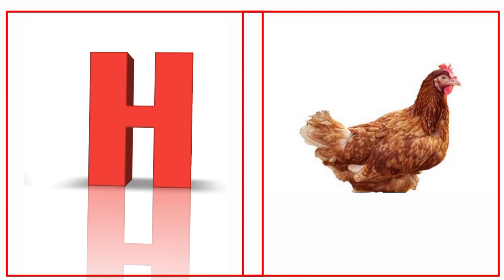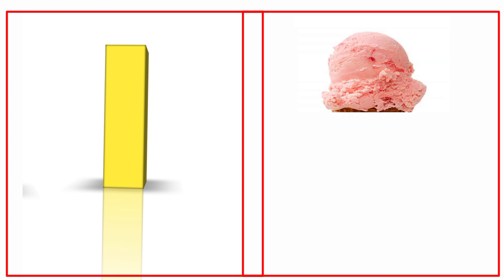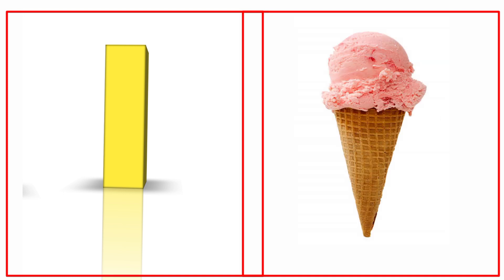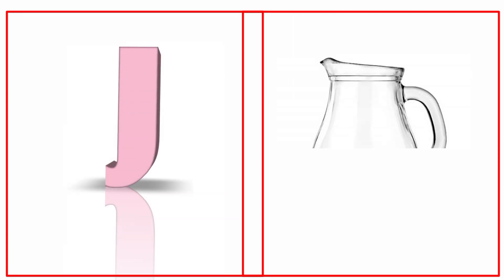H for hen. Hen means murgi. I for ice cream. Ice cream means ice cream. J for jag. Jag means jag.